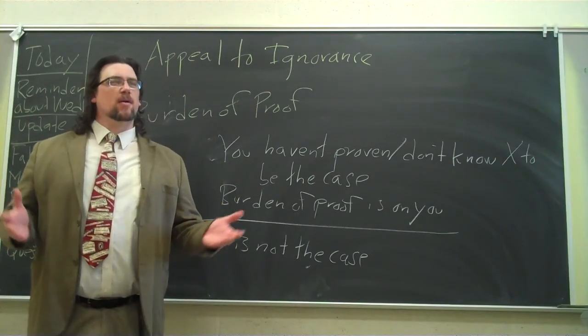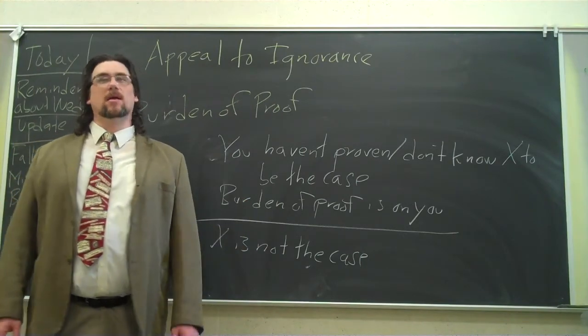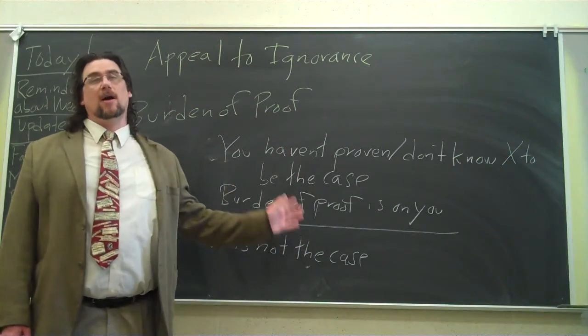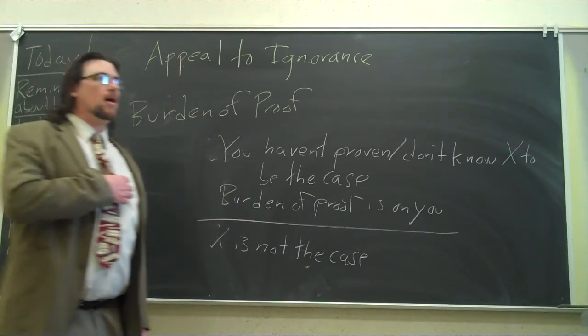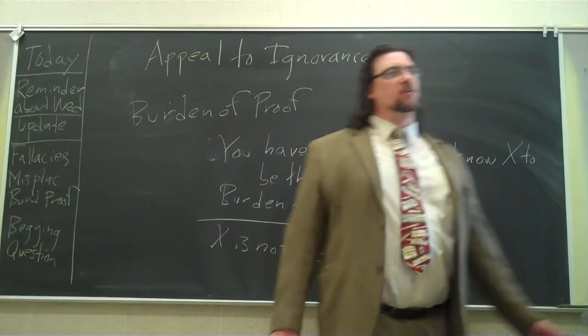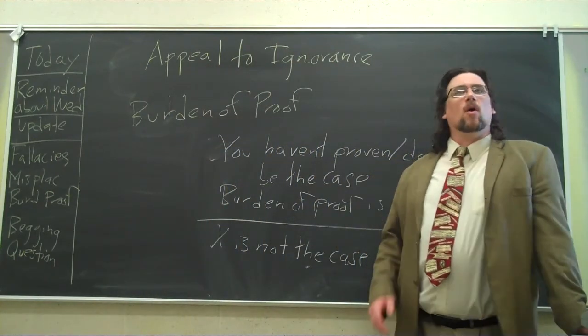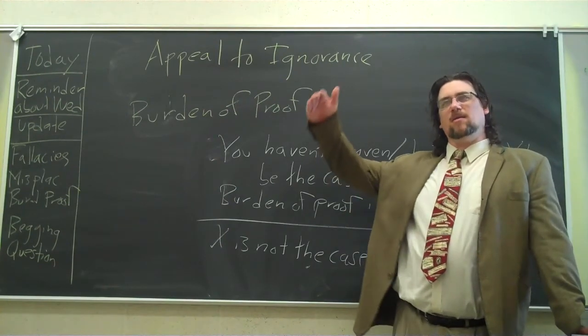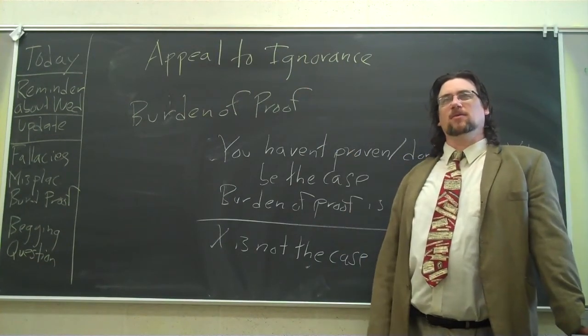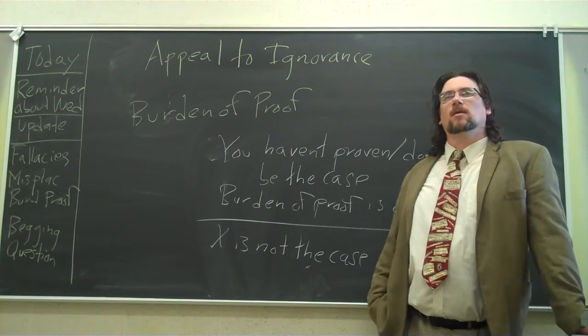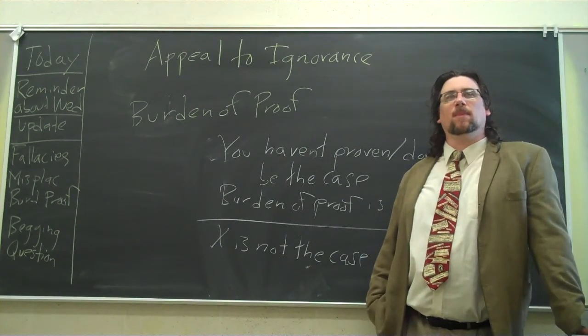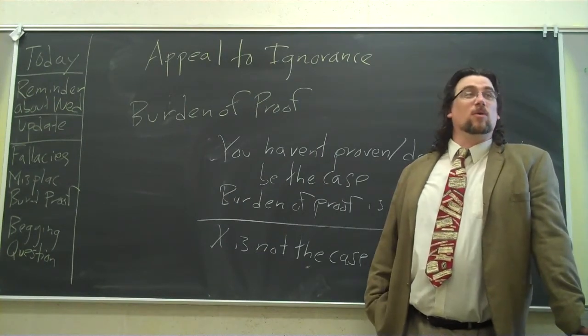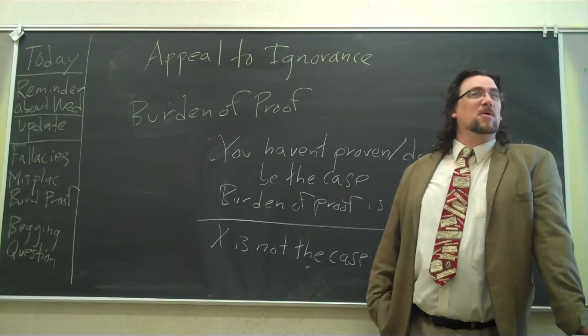Then somebody should say, where's your evidence? Where's your proof of that? And if I just say, well, you don't know that that's not the case, so it is the case, I'm committing the appeal to ignorance. And people do this with all sorts of other conspiracy theories. Oftentimes, what they'll do when they have a conspiracy theory is it'll be layer on layer of argument and ignorance.